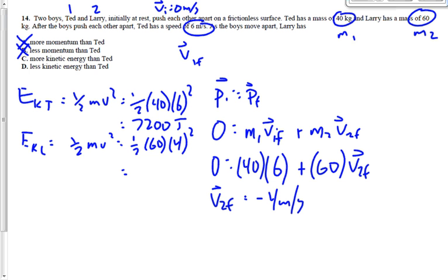Ted is 40 kg and his speed is 6. 6 squared is 36 times 20 is 7,200 joules for Ted. For Larry, it's going to be one half of M2V2 squared — mass is 60 and V is 4. 4 squared is 16, times 30 is 4,800 joules. So Larry has less kinetic energy than Ted. The answer is D. Although it was an overwhelming majority, the majority of you still got the right answer. Did anybody do this question without actually calculating the speed — legitimately, not just guessing — because there is a way of reasoning through it?